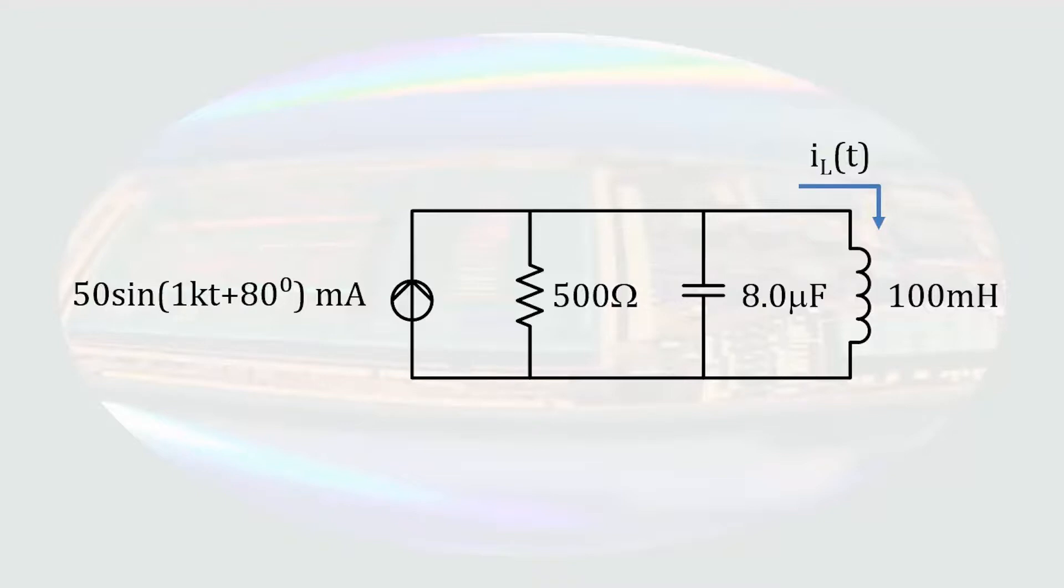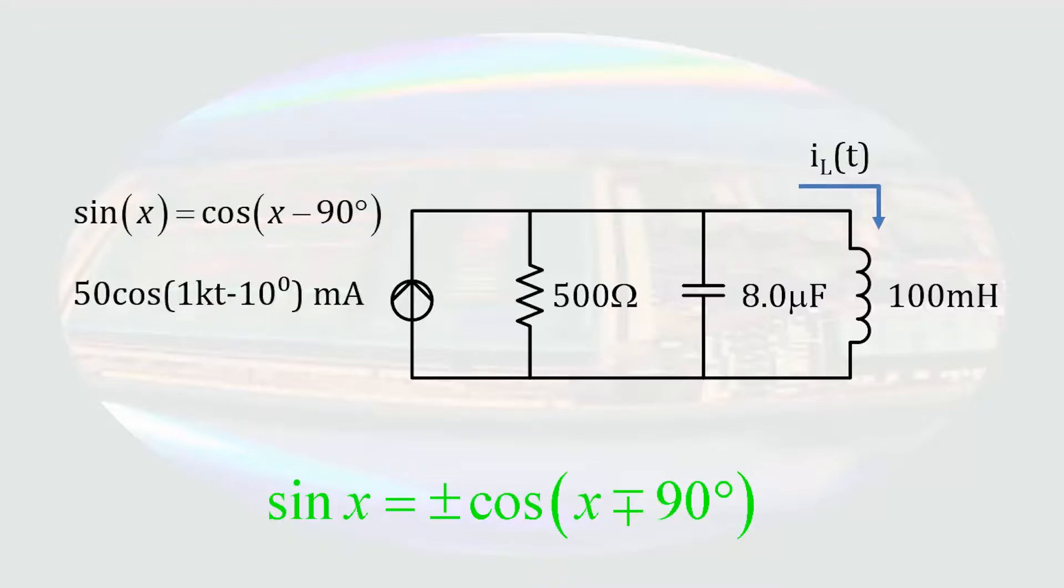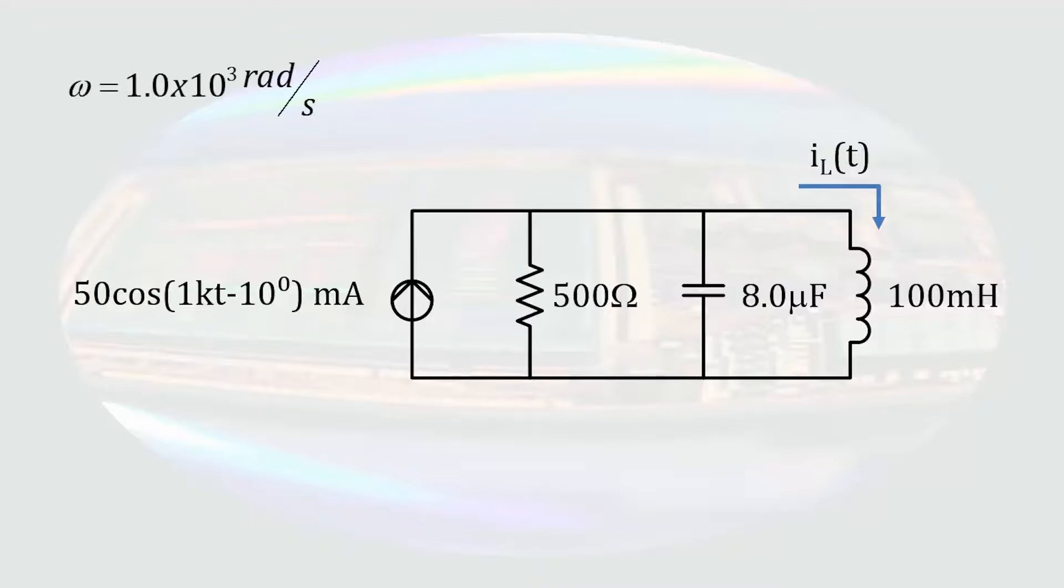The first wrinkle we might notice is that the source is given as a sine function. Before we convert to the phasor domain, we're going to have to convert that to a cosine function by subtracting 90 degrees from the argument. So then we have 50 cosine of 1000t minus 10 degrees milliamps. We should write the angular frequency off to the side so that we have it for calculations. Then we can start converting the circuit to the phasor domain.